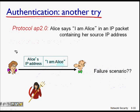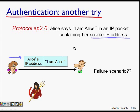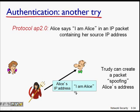The next attempt is Protocol 2.0: Alice includes her IP address in the packet, thinking no one else will have her IP address, and believes the protocol is now secure. But there is still a failure scenario — IP spoofing. Anyone can send a packet with a fake IP address, so Alice's address can be written into a packet from Trudy's computer, and Protocol 2.0 is also not good enough.